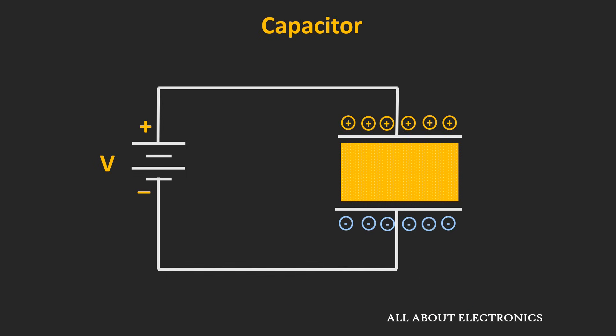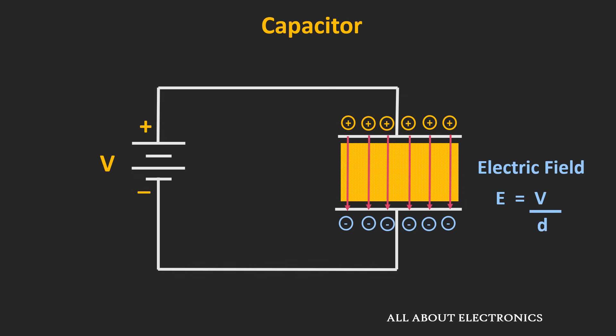Because of this potential difference, an electric field develops across the two plates. This electric field is directly proportional to the potential difference and inversely proportional to the distance between the two plates — so the smaller the distance, the stronger the electric field. When we apply voltage to the capacitor, charges develop across the two plates, and because of that charge development, the electric field is developed between the plates. In this way, the capacitor stores energy in the form of this electric field.